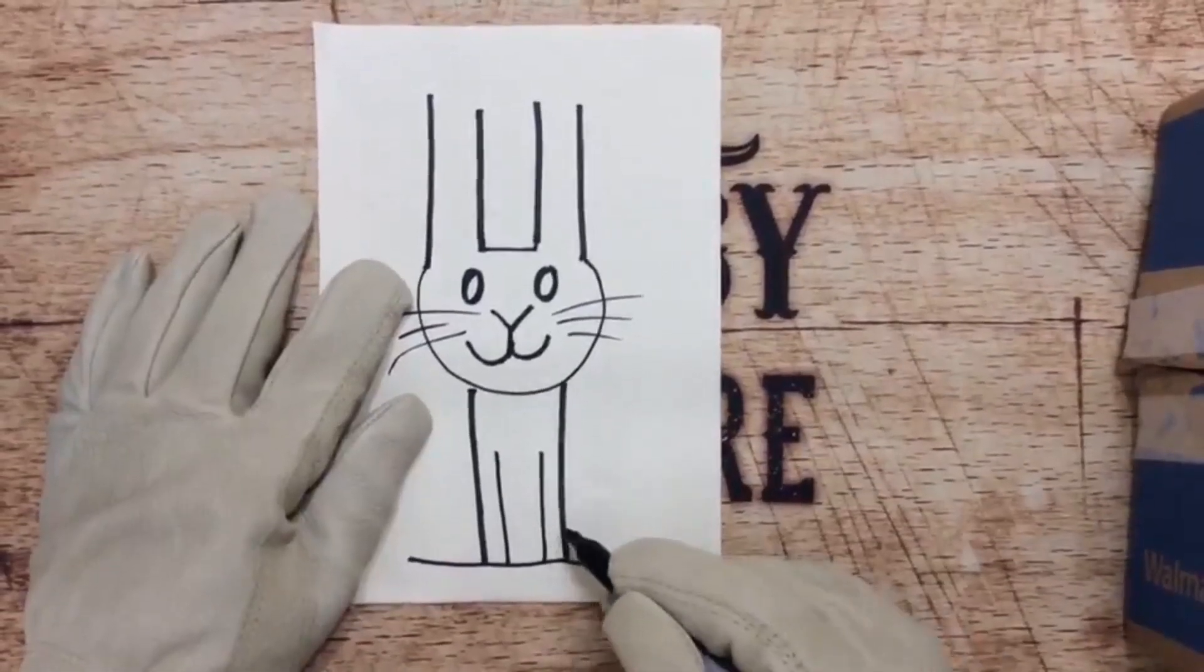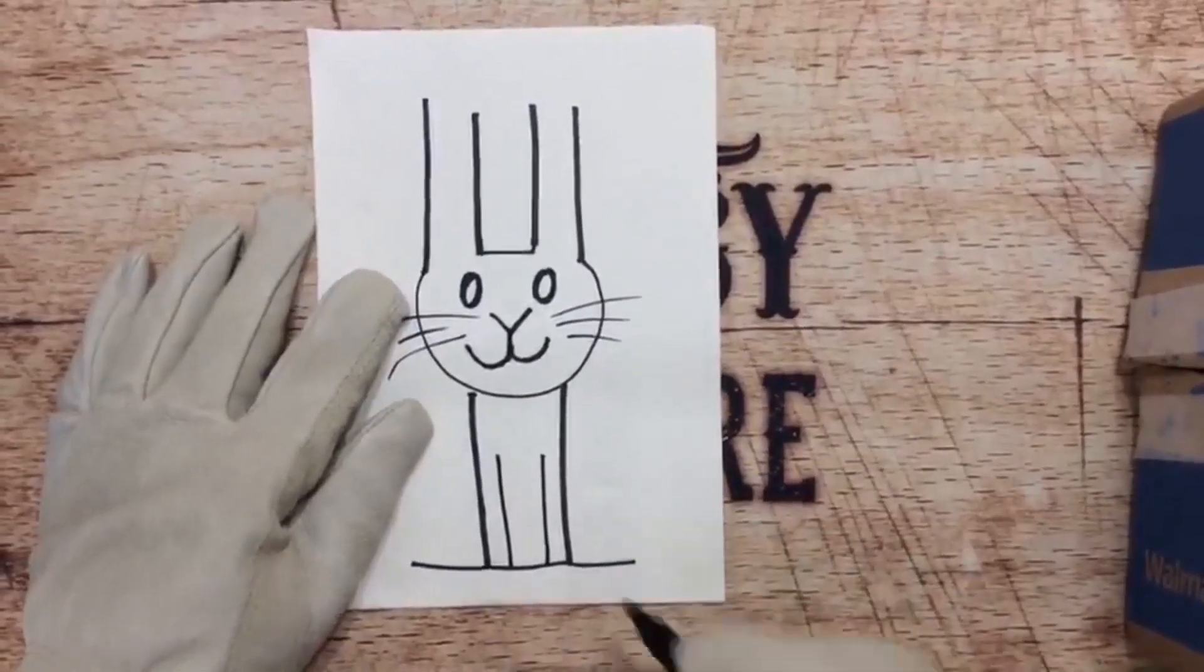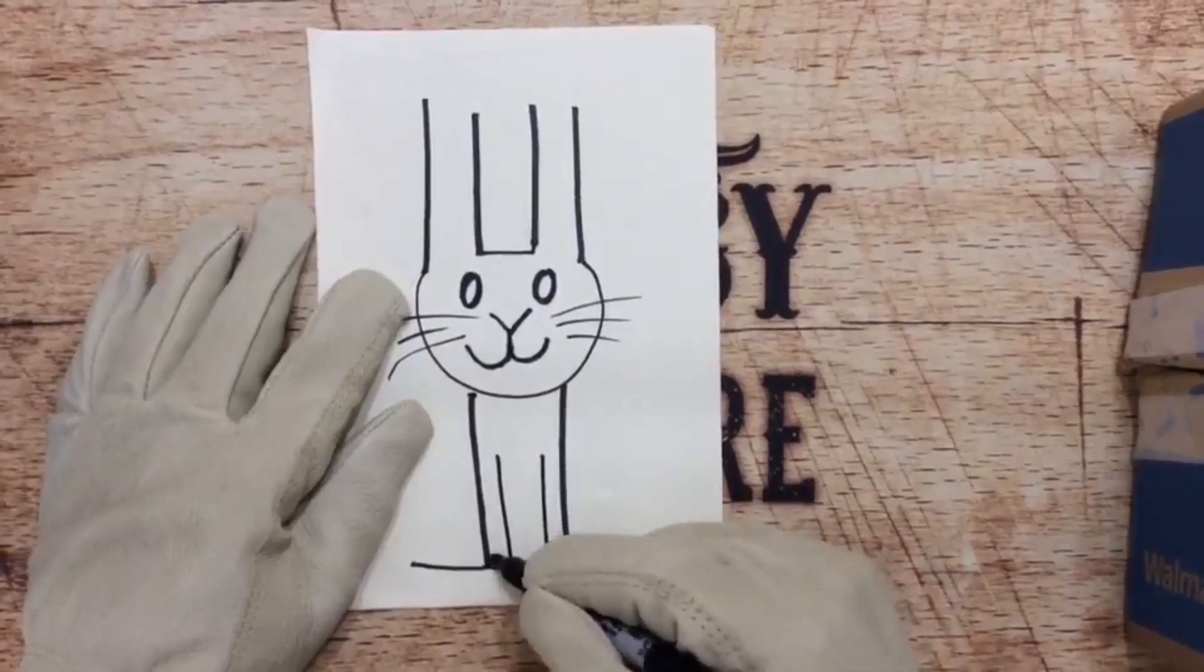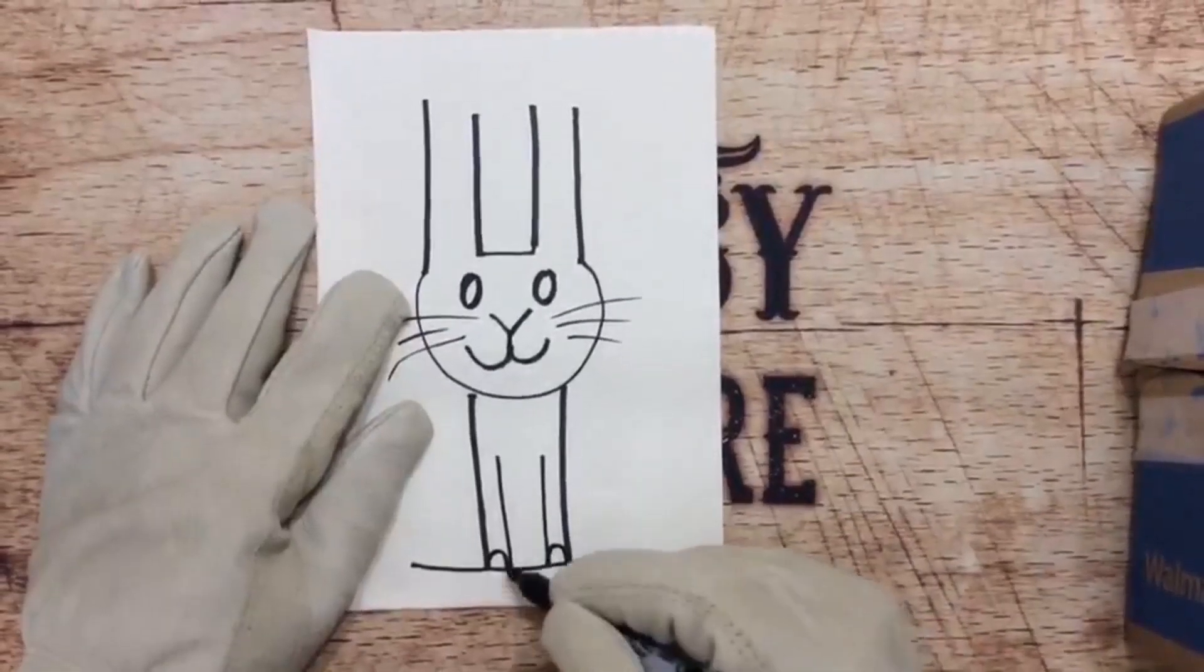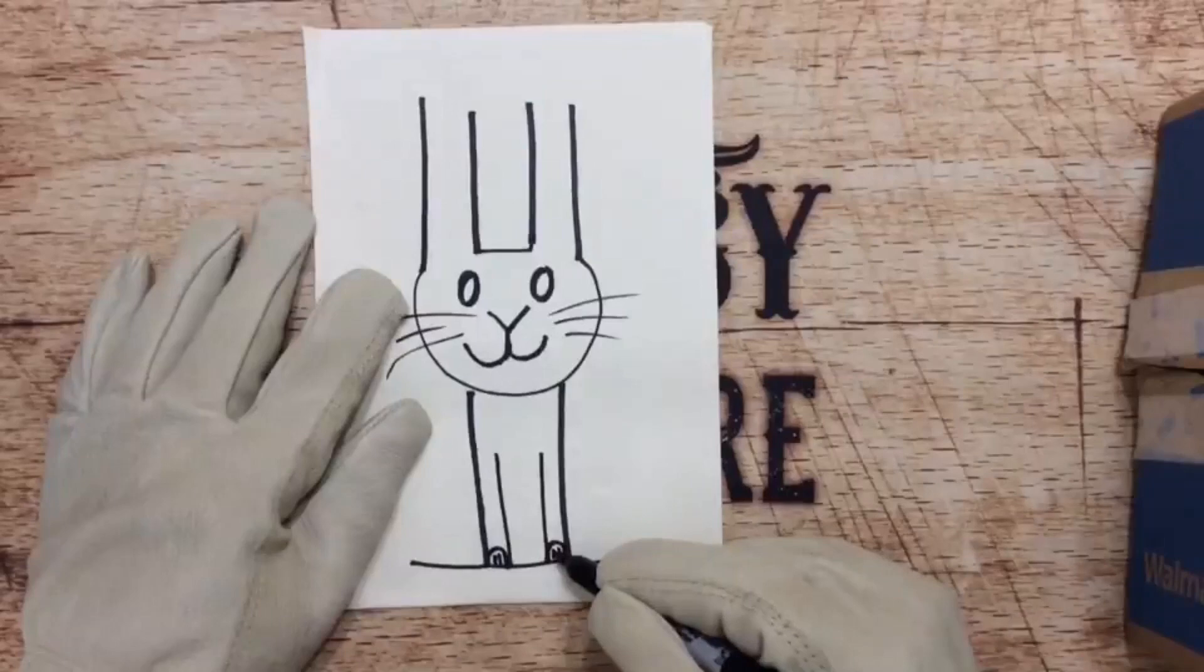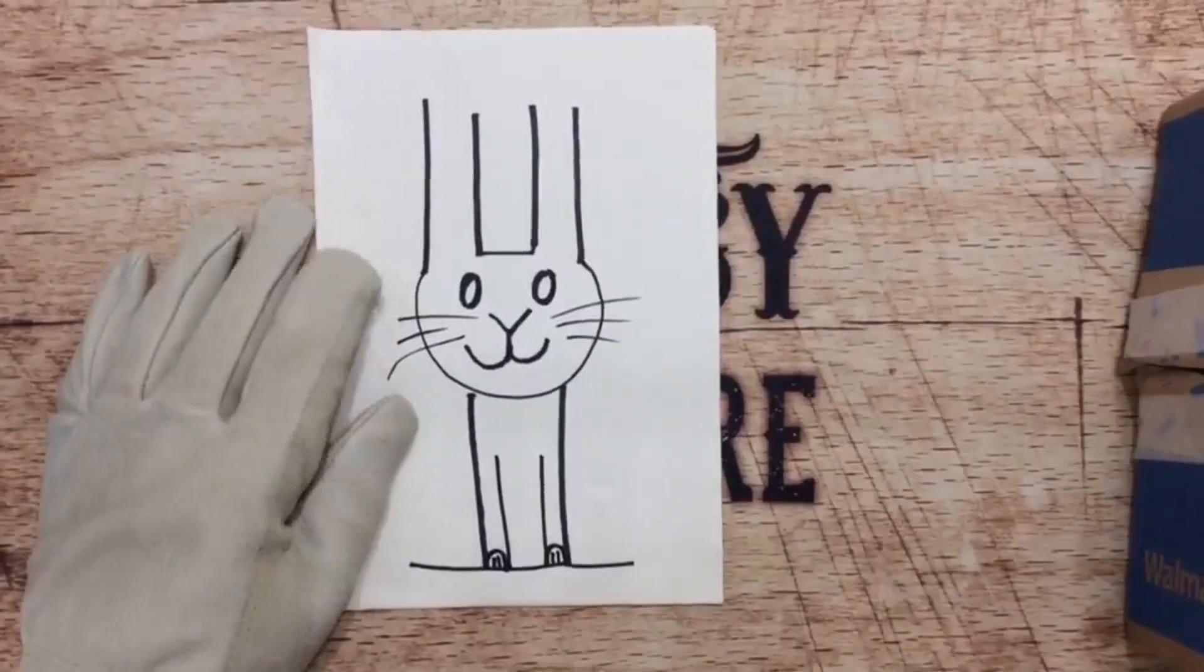Now we're going to put some little bunny paws right here. We're going to do a lowercase n shape, that little hill shape right there. And for his little rabbit toesies, we're going to put an 11 in the middle there. That's going to separate his little paws. Awesome.